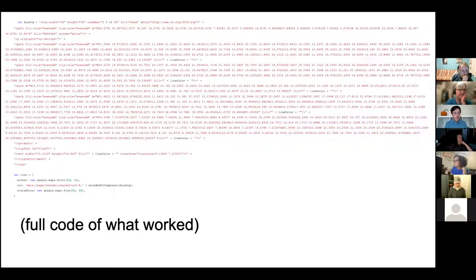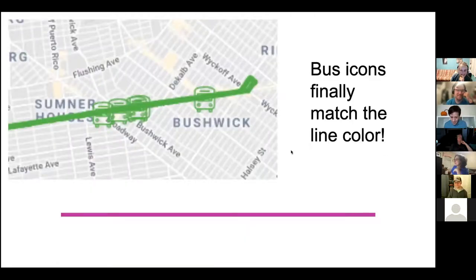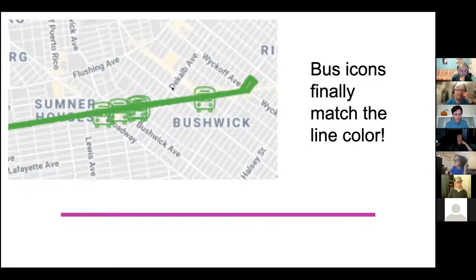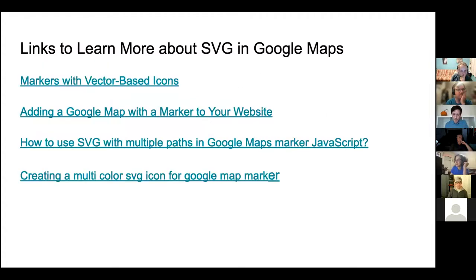This was just a painting I did this morning and I wanted to throw it in - that's why I like doing slideshows, you get to throw in fun things. So anyway, with that code the bus finally worked - the green bus icon matches the line. We still have to work on the rounding, but this was solving that particular piece. The red line matches the icon. And then there are links so you can learn more.